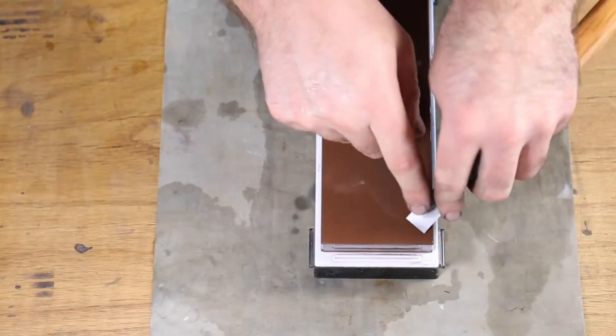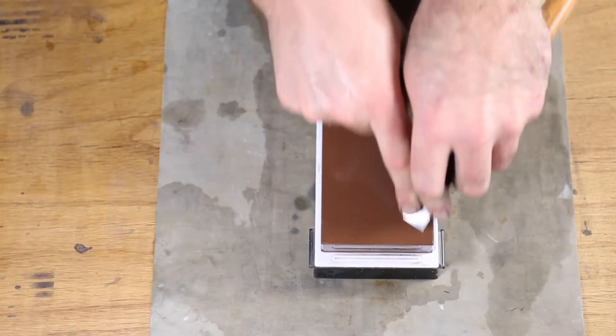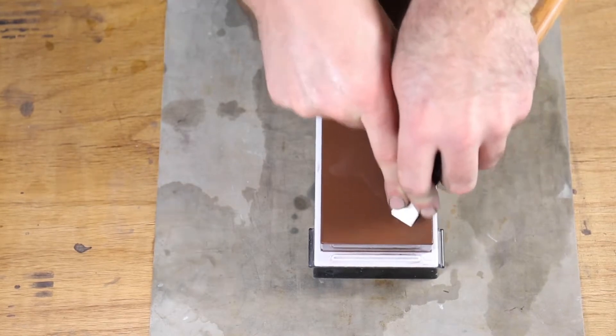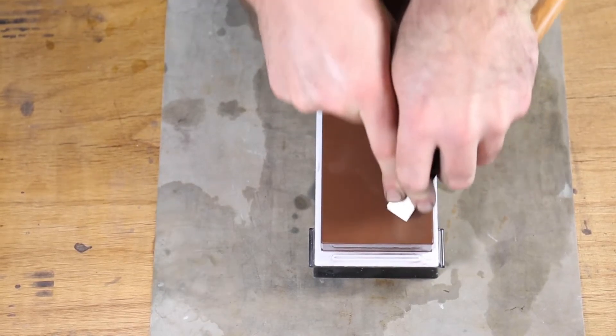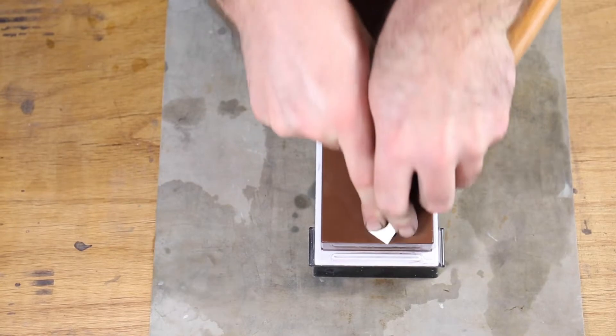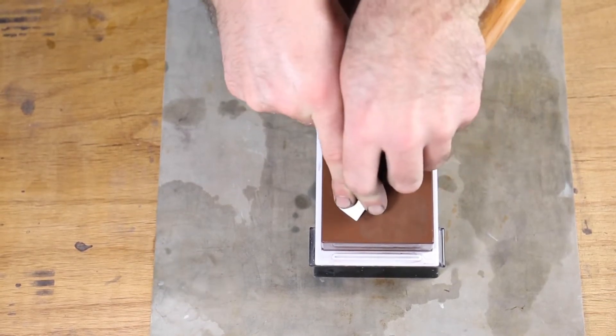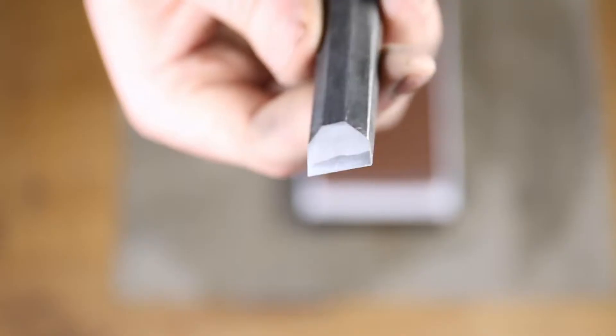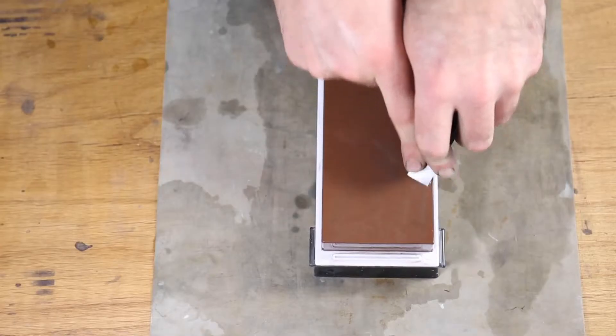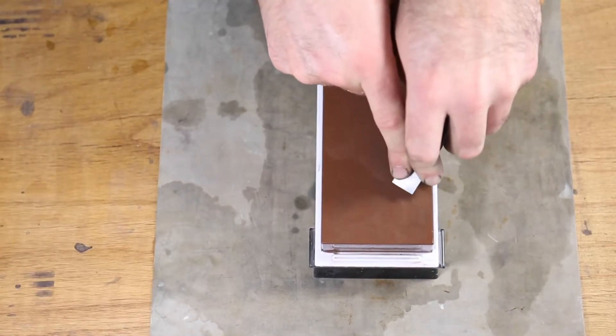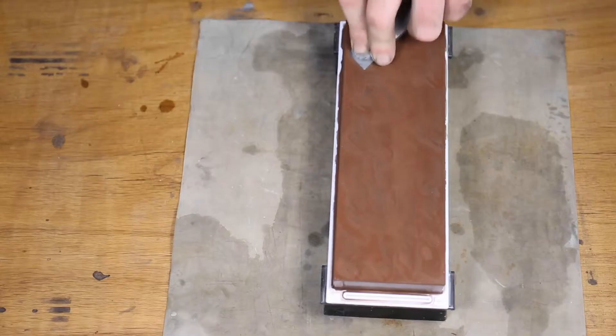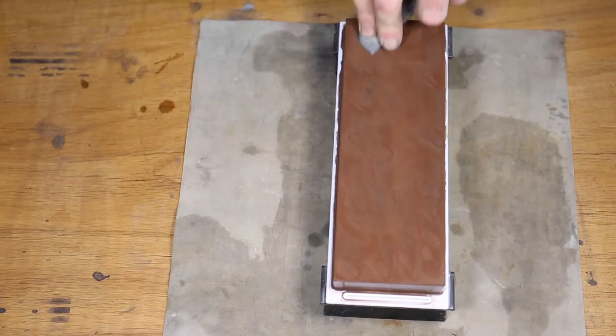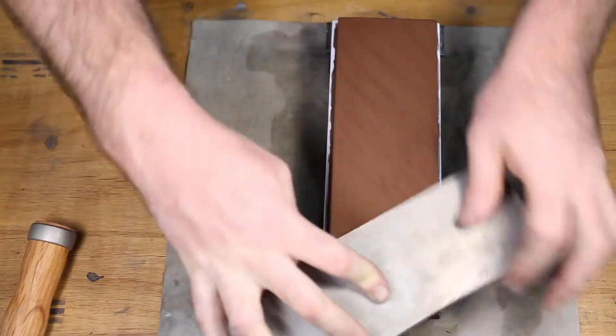The 800 grit Cerax water stone is often overlooked in favor of its brilliant 1000 grit sibling, but Suehiro have been very smart in the development of this stone and differentiated it greatly from the 1000. The 800 is much harder than the 1000, comparable in hardness to the 6000 grit stone much higher up in the grit rating, and noticeably coarser than the 1000 without hitting the absurd levels of aggression of the 320.